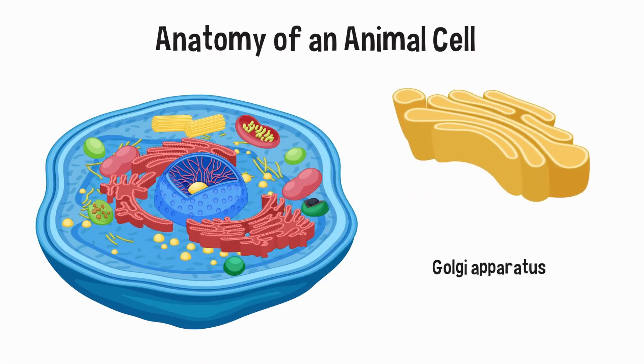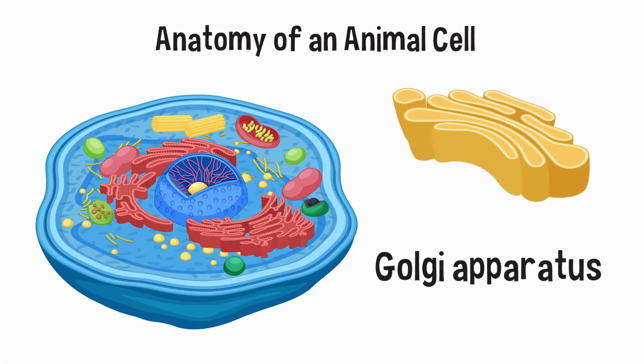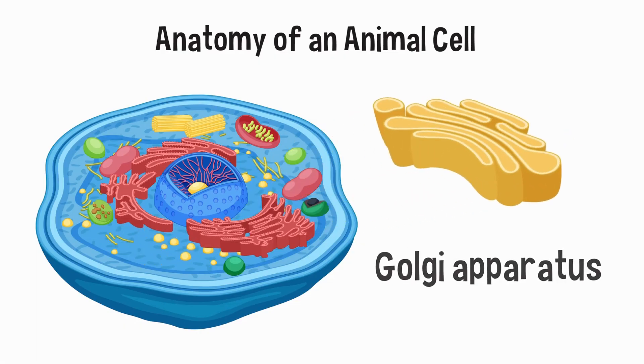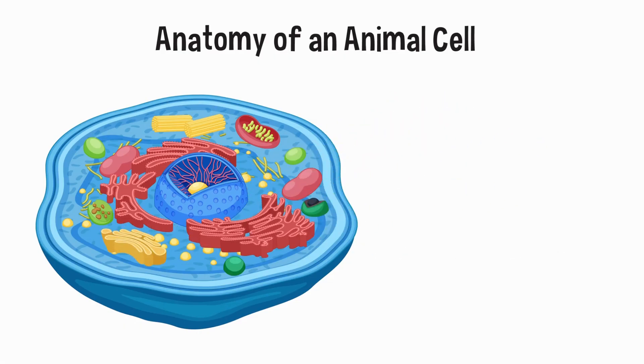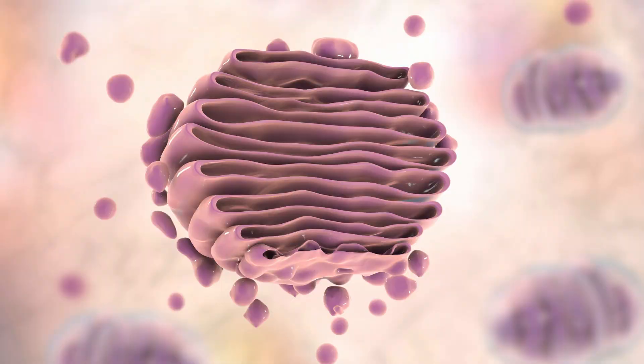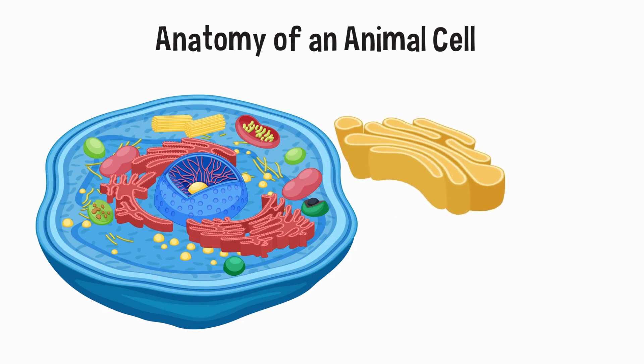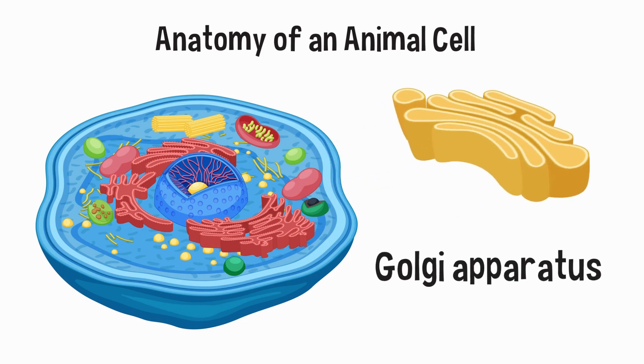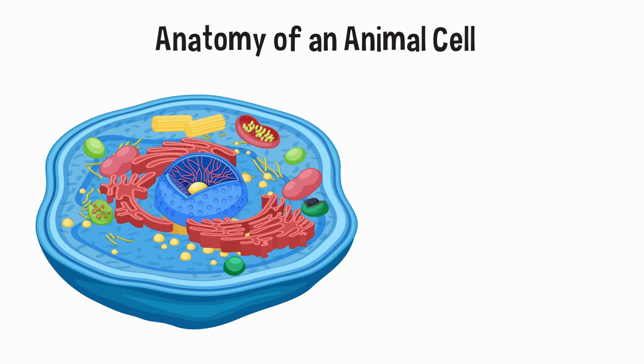The Golgi apparatus, also known as the Golgi complex, Golgi body, or simply the Golgi, is an organelle found in most eukaryotic cells. It plays a role in cell secretion.